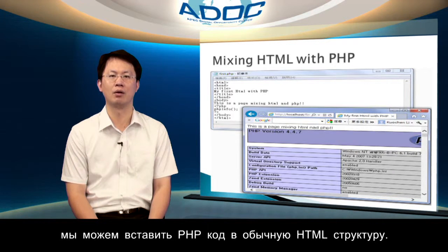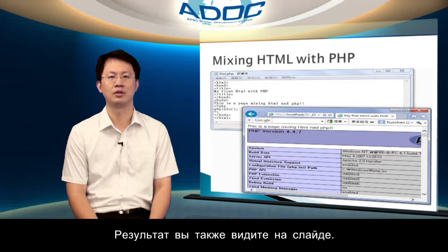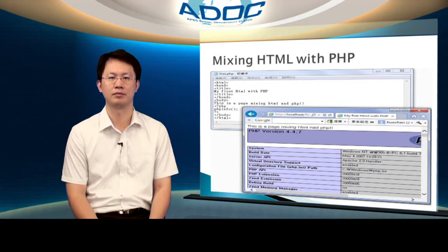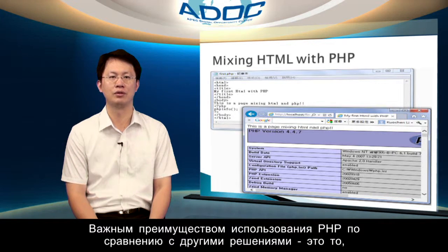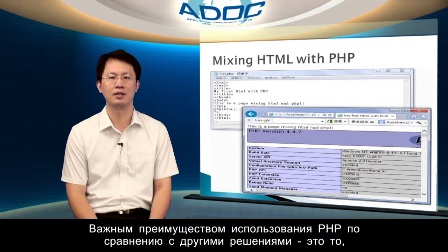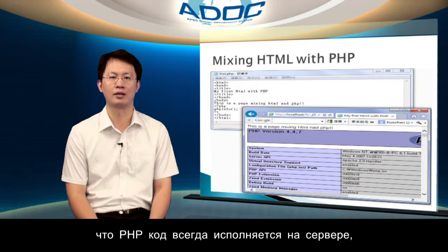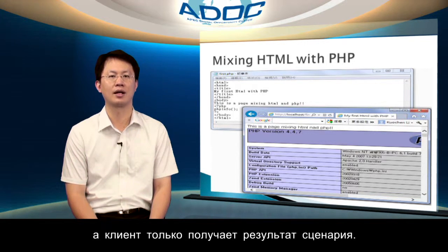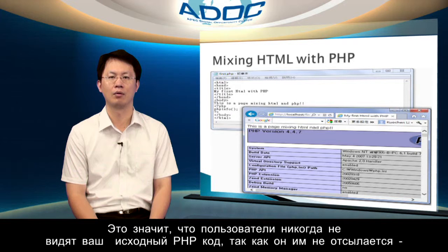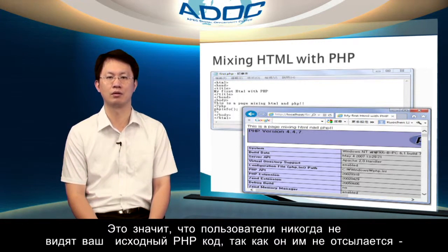Because you can use HTML in your scripts as long as you surround your PHP with <?php and ?>, as shown in the slide, we can put PHP code inside regular HTML structures. The result is shown in the slide too. One key advantage to using PHP as opposed to some other solutions is that PHP code is all executed at the server, with the client only receiving the results of the script. What this means is that users never see your PHP source code, because they are never sent it — they only see what you want them to see.